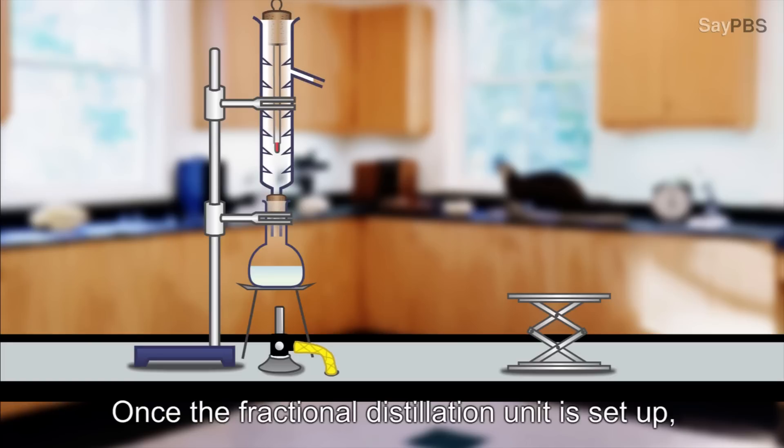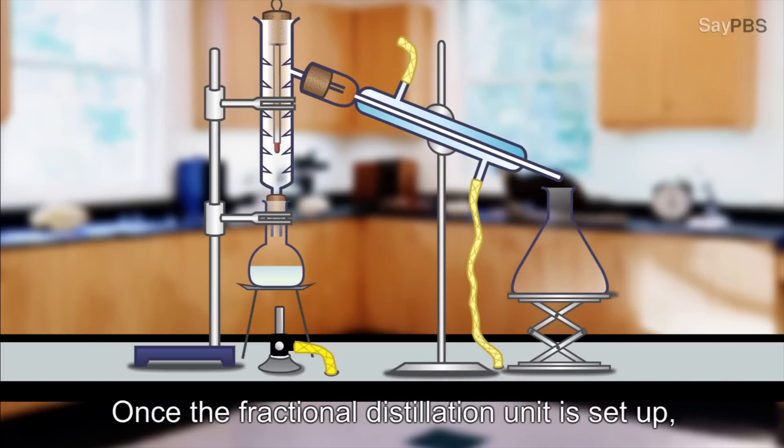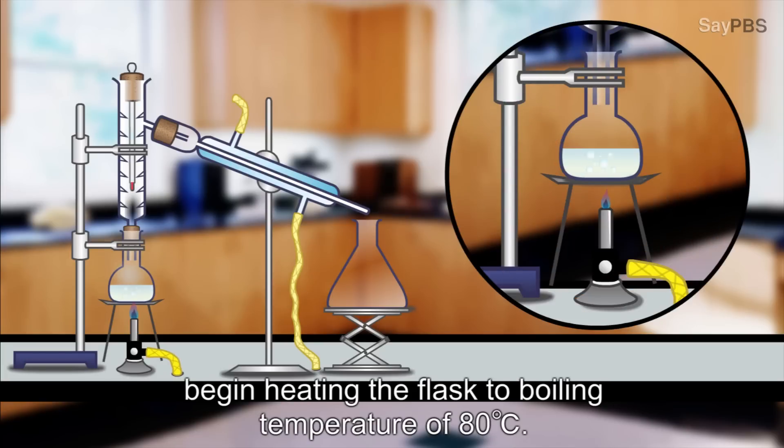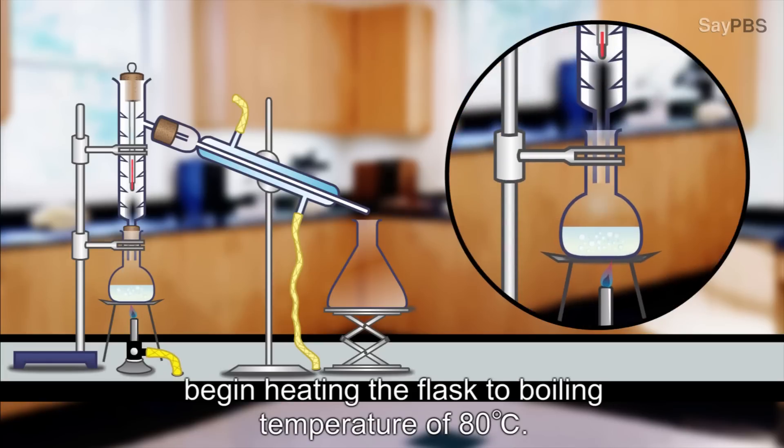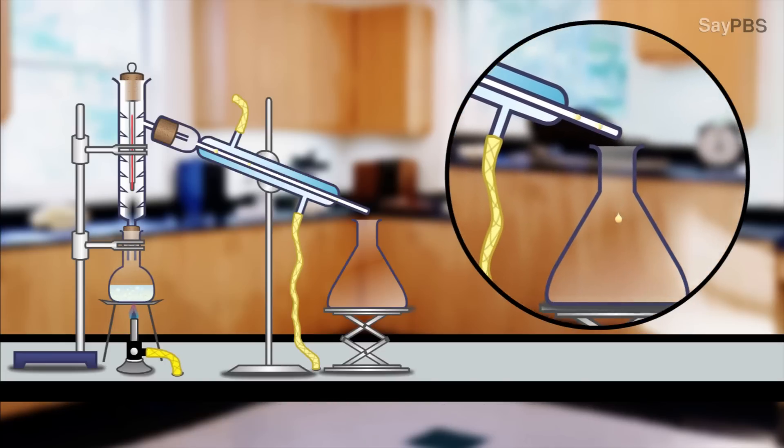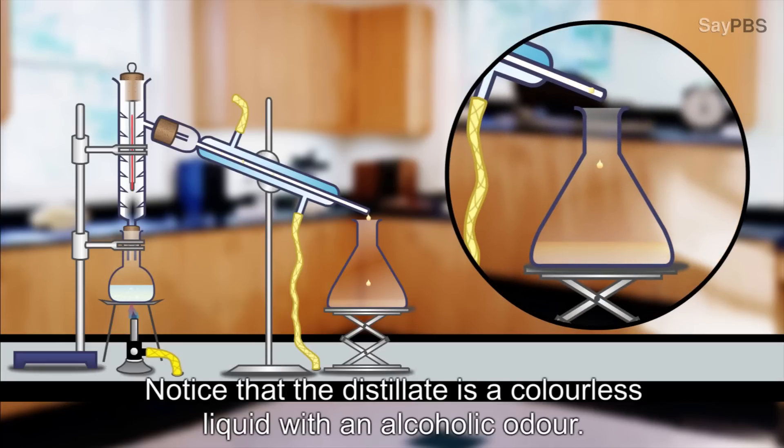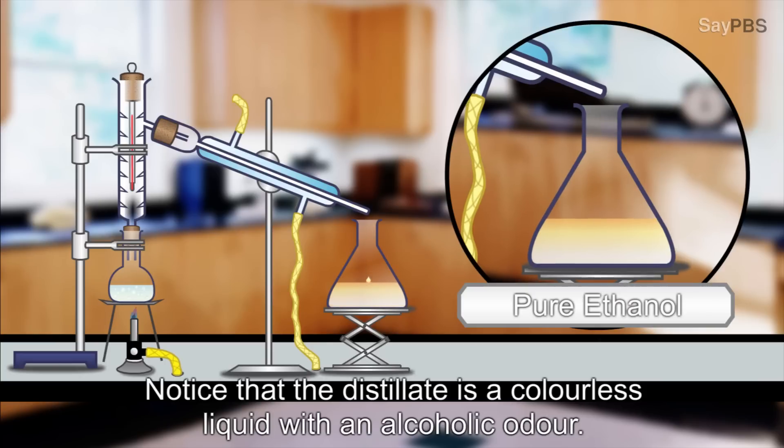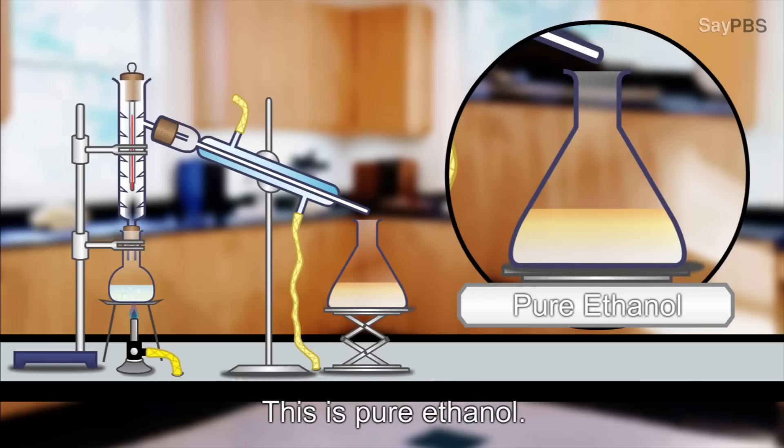Once the fractional distillation unit is set up, begin heating the flask to boiling temperature of 80 degrees Celsius. The distillate is then collected in the flask. Notice that the distillate is a colorless liquid with an alcoholic odor. This is pure ethanol.